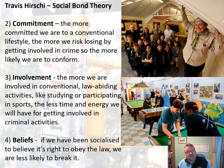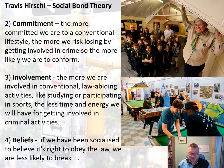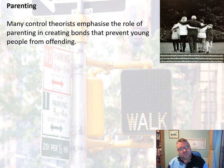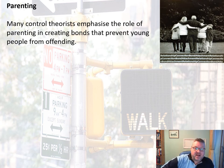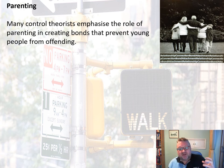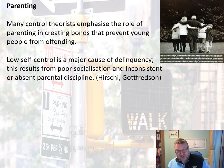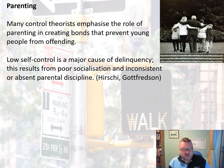Fourth, Hirschi talks about beliefs: if we've been socialised to believe it's right to obey the law, we are less likely to break it. Parenting plays a key role here. Many control theorists emphasise the role of parenting in creating those bonds that prevent young people from offending. Low self-control is a major cause of delinquency, and that low self-control results from poor socialisation and inconsistent or absent parental discipline — as Hirschi and Gottfredson particularly argue.